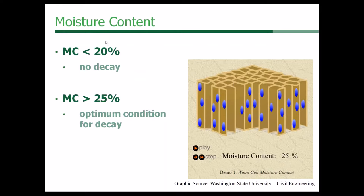As we get into this discussion, it's important to know where is that line where the moisture content of wood is conducive for decay. For the most part, moisture content less than 20%, you're not going to see decay. The optimum conditions for decay are above 25% moisture content. Between 20% and 25% it's kind of a toss-up depending on other conditions present at the site. The optimum conditions are going to be at 25% or greater.